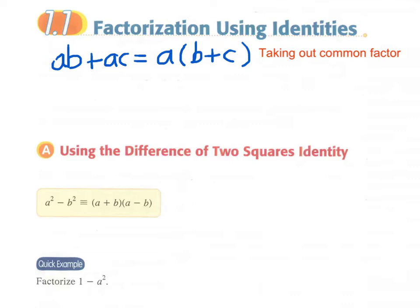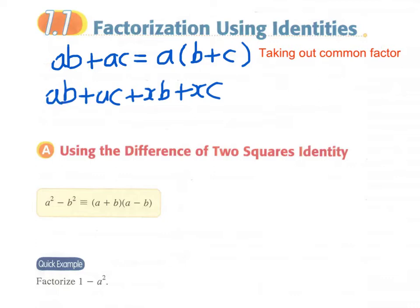We have another method called grouping like terms. Let's say we have another expression: ab plus ac plus xb plus xc. We can see that we don't have a common factor across all four terms, but we can find a common factor a in the first two terms and another common factor x in the last two terms. Then we can group the four terms into two groups. We write the expression as (ab plus ac) plus (xb plus xc).